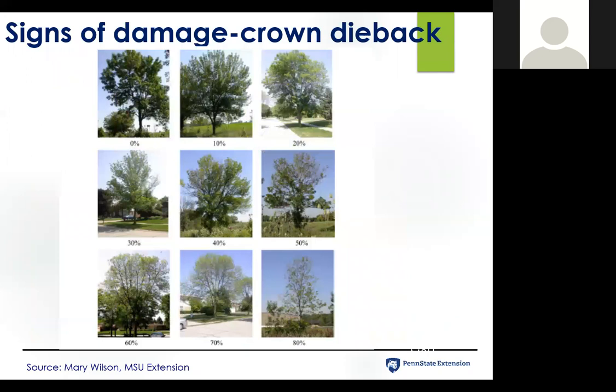Over time, as the infestation progresses, you'll see a progression of dieback in the crown. The adults do feed on the leaves and defoliate the crown, as well as defoliation from the poor health of the tree. There are suggestions that if you see a tree with more than 50% crown dieback, the insecticide treatments recommended to control emerald ash borer actually won't be effective in helping that tree to recover. So that's a threshold point at which insecticides are no longer useful.